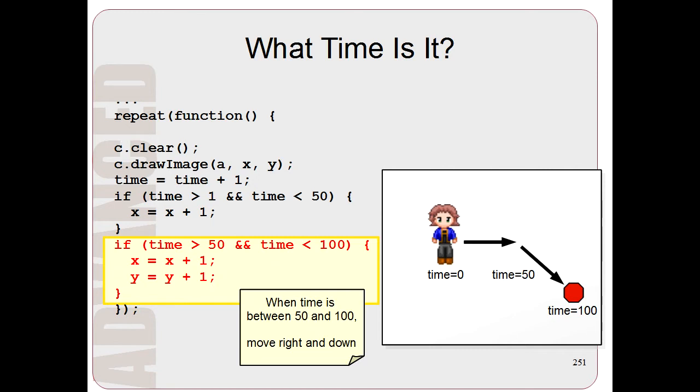And these lines say x equals x plus 1, so the person should move to the right. And y equals y plus 1, so the person should also move down. So when the time is between 50 and 100, the person should move down and to the right.